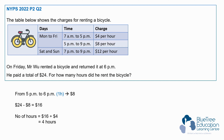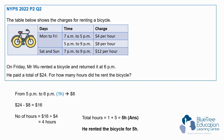So the total amount of time he rented the bike is 4 hours plus the 1 hour from the $8 rate. That gives us 5 hours. He rented the bicycle for 5 hours. Did you get this answer too?